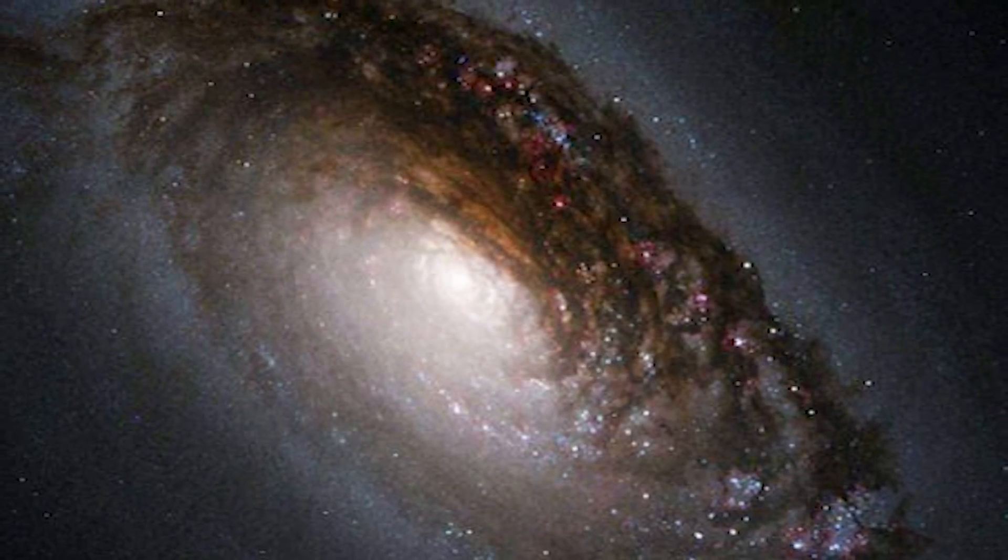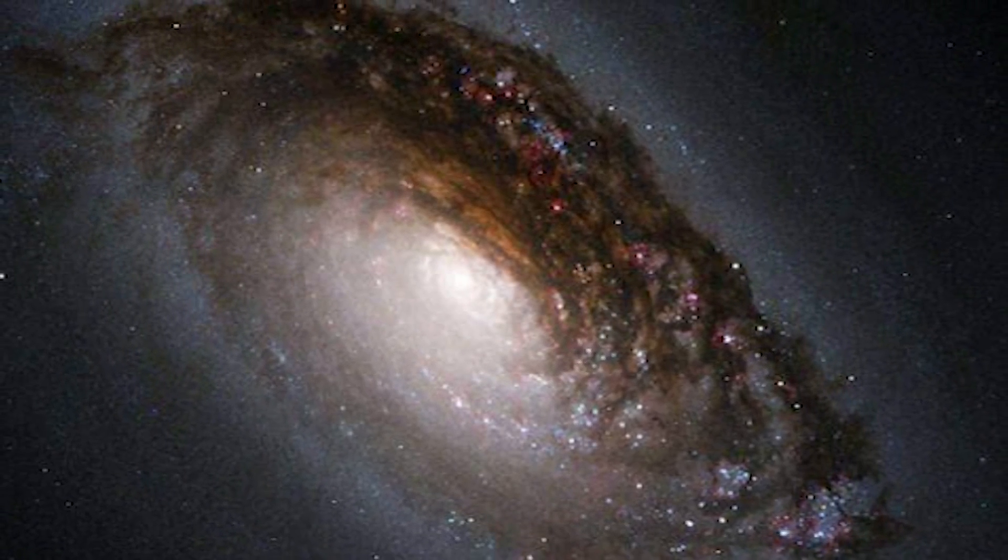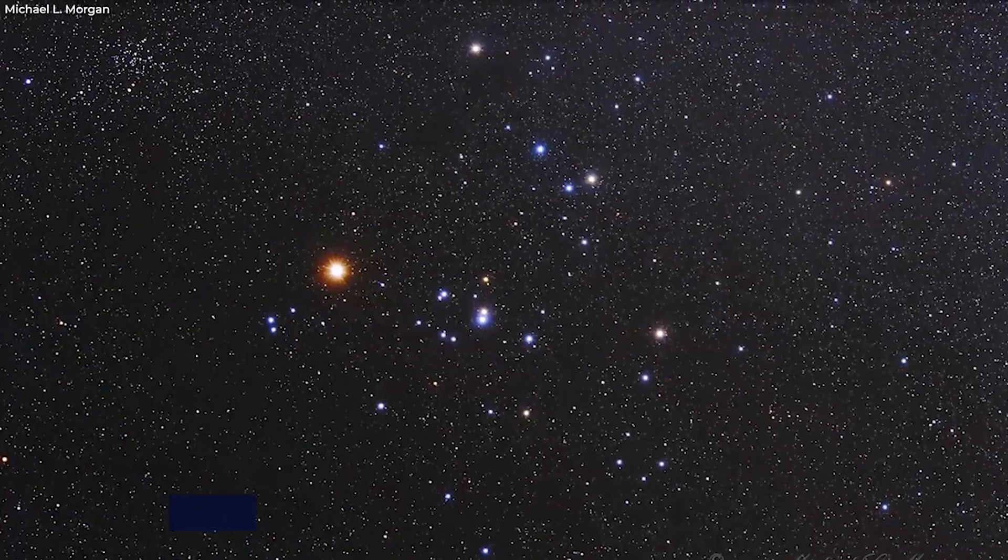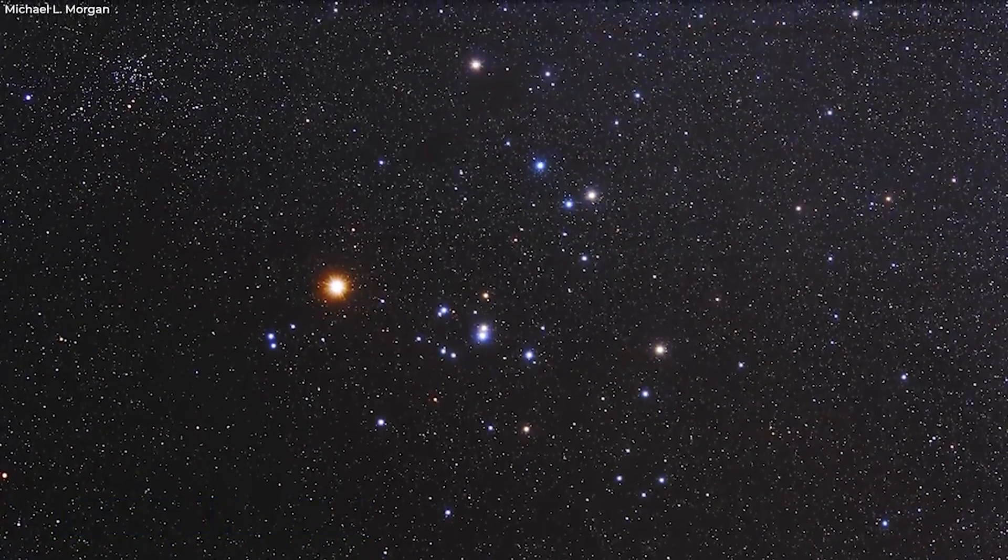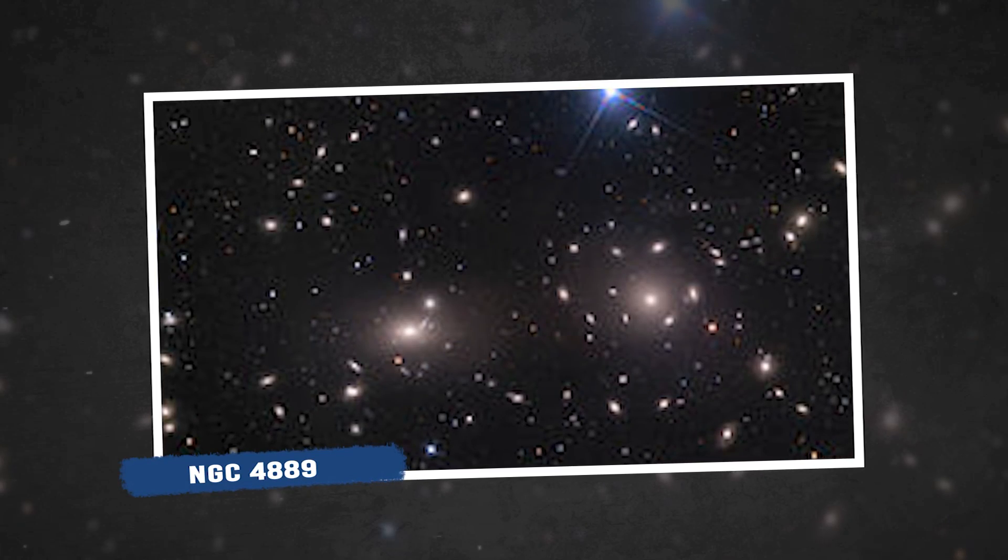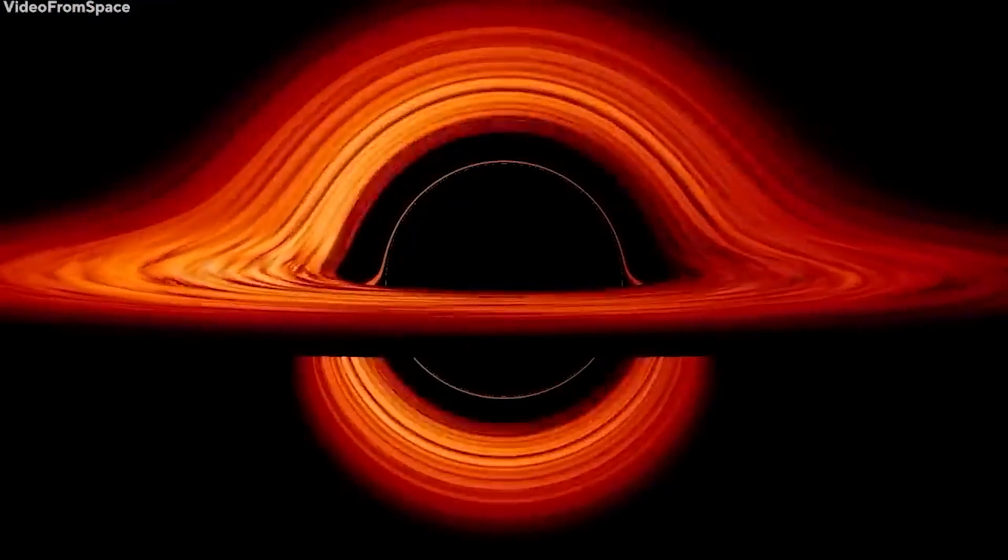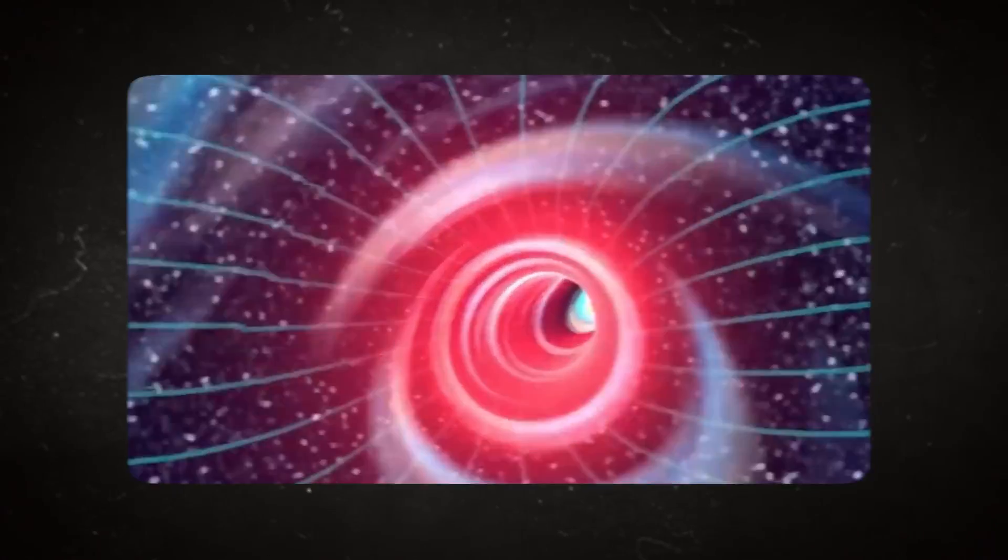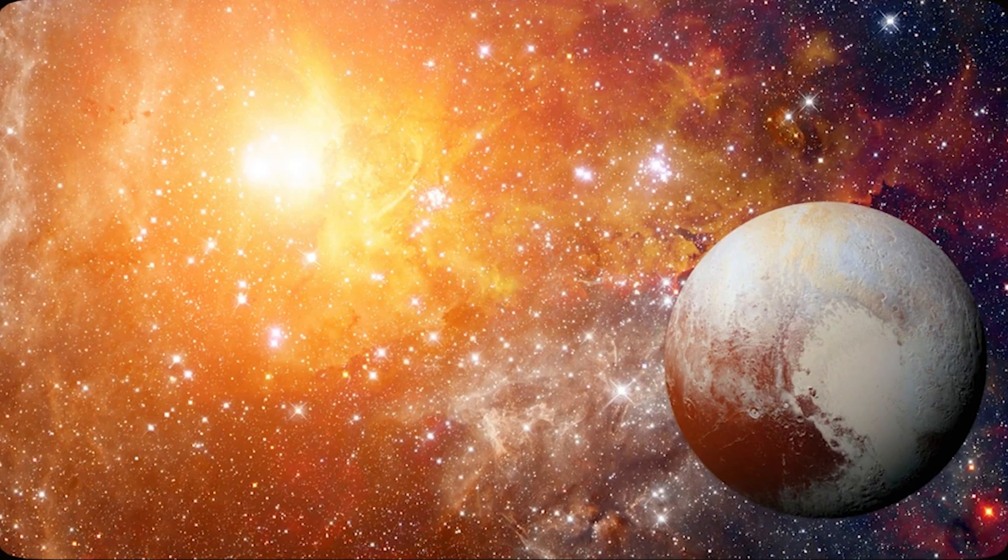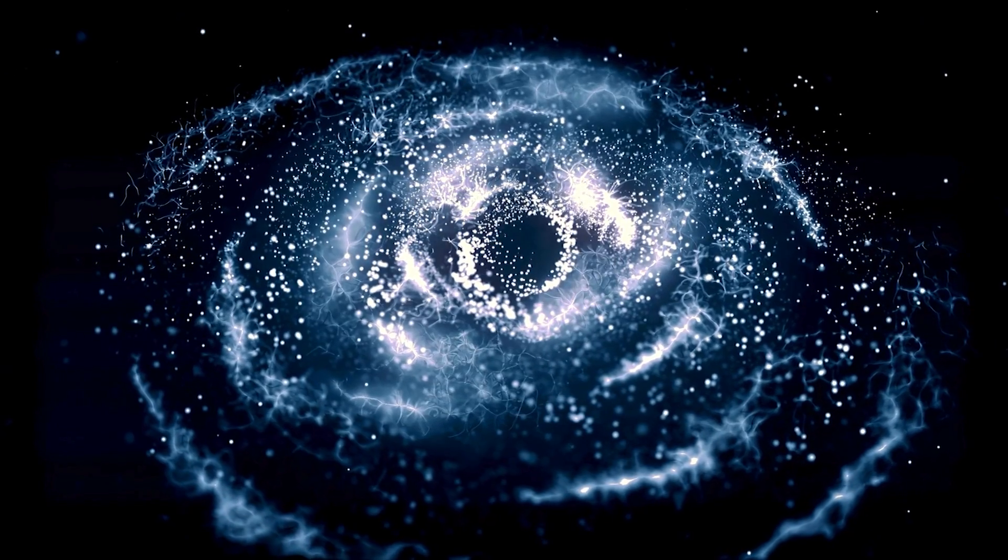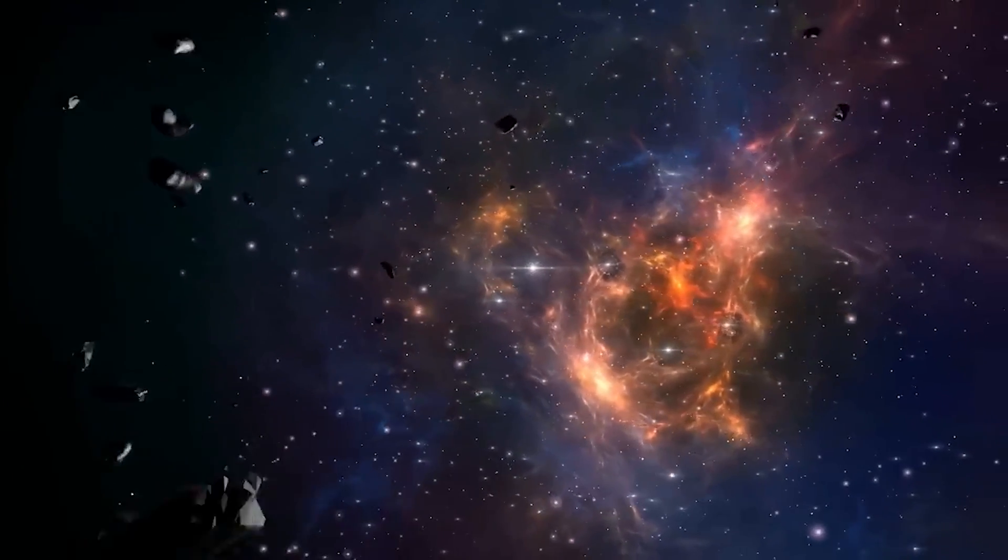The central black hole of NGC 3842, the brightest galaxy in the 320 million light year away Leo cluster, has a mass of 9.7 billion suns. NGC 4889, the most luminous member of the distant Coma cluster, features a black hole of similar or greater mass. The gravitational range or event horizon of these black holes is nearly five times the distance from the sun to Pluto. The black hole at the center of our galaxy, which has an event horizon a sixth the size of Mercury's orbit, is 2,500 times smaller than these.